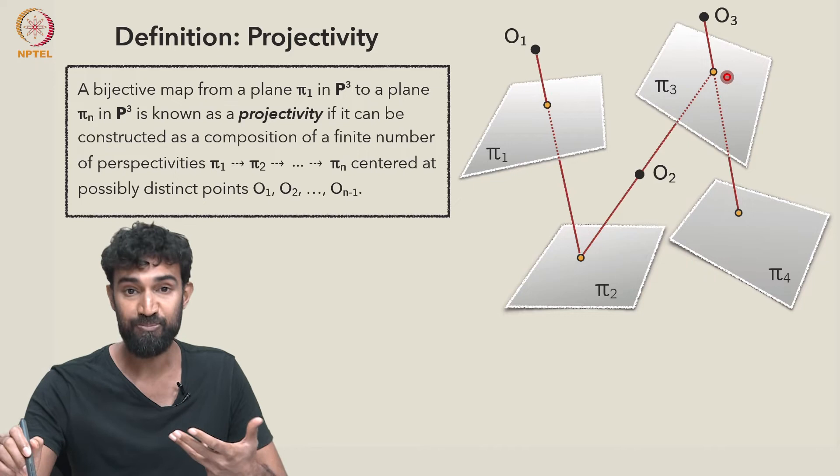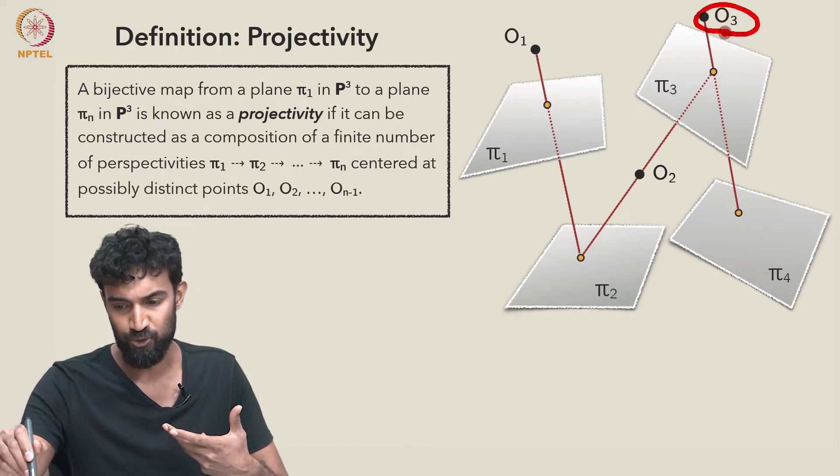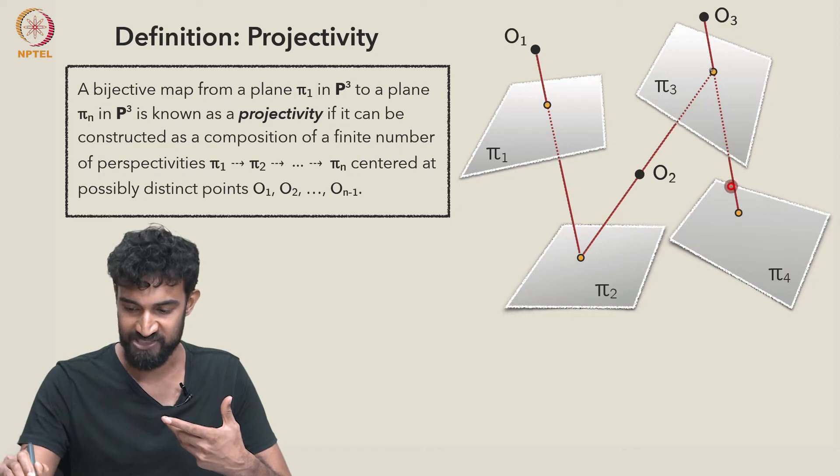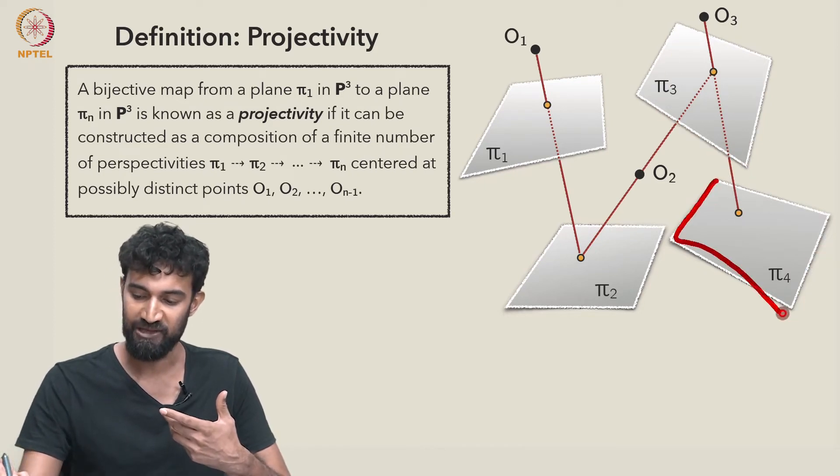followed by a third perspectivity centered at O₃, which maps this point in π₃ down to this point in π₄, and in fact maps the entire plane π₃ to the plane π₄.